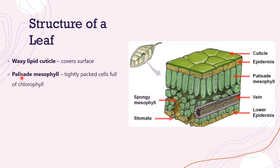Then we have the palisade mesophyll. These are tightly packed cells full of chloroplasts, which contain chlorophyll — a green light-absorbent pigment — and this is very important in photosynthesis. These palisade cells contain loads of chloroplasts which contain lots of this pigment.